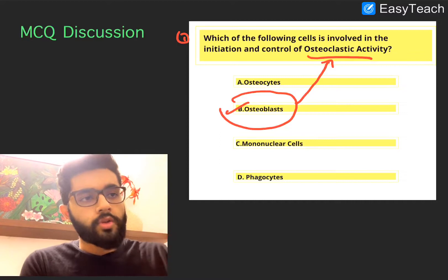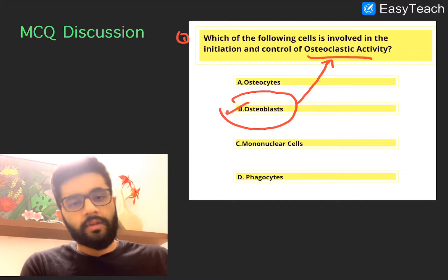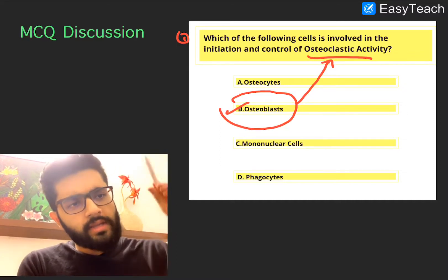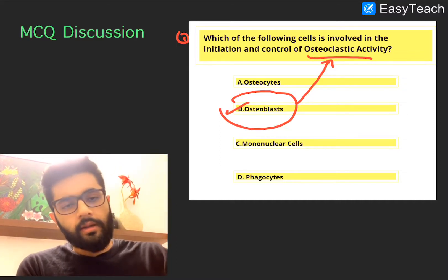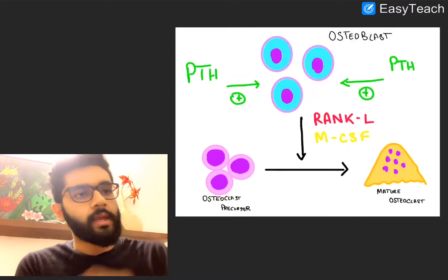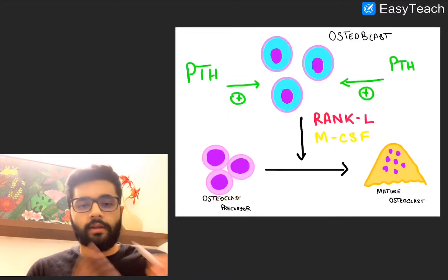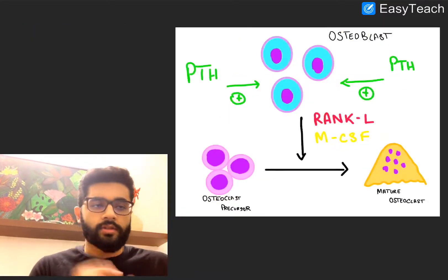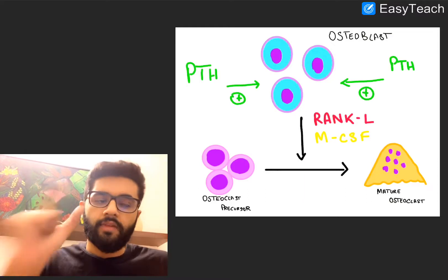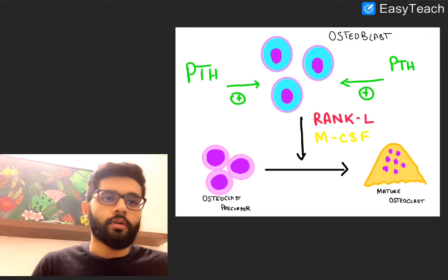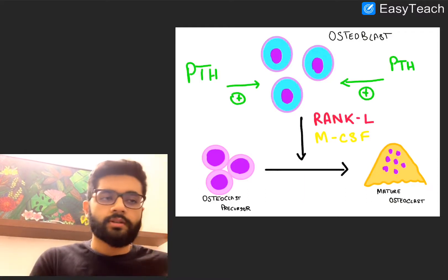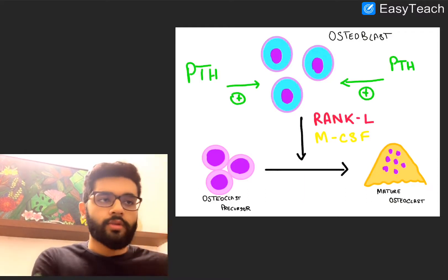Osteoclastic activity — that is the destroying activity — is completely under the control of the osteoblasts. So the answer is B. Now let's understand this concept at a cellular level, because it is very important and you'll know in future discussions how this can be applied.